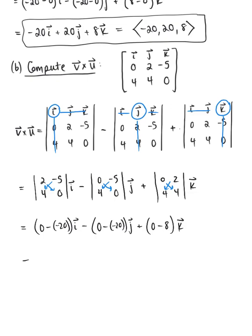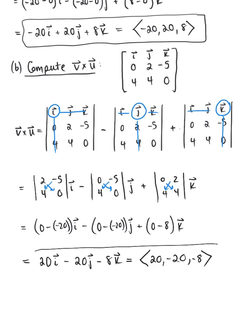And simplifying this, we are left with 20 i hat, minus 20 j hat, minus 8 k hat. Or if we wanted to put this into our component form, we have 20, negative 20, negative 8. So this is our beautiful final answer.